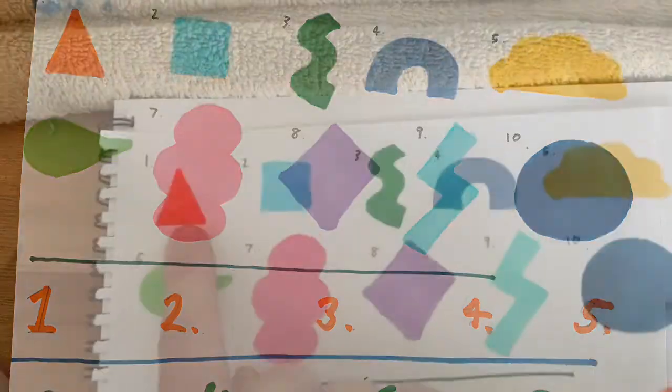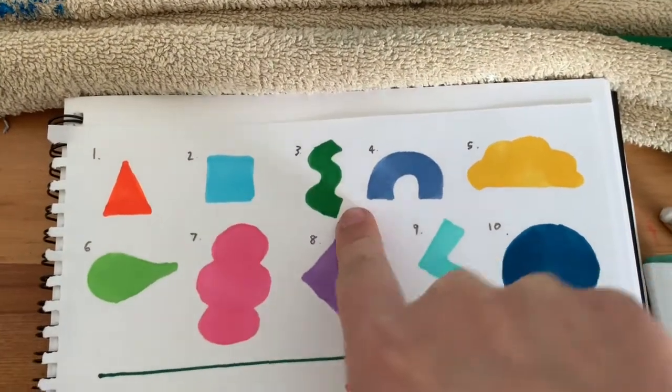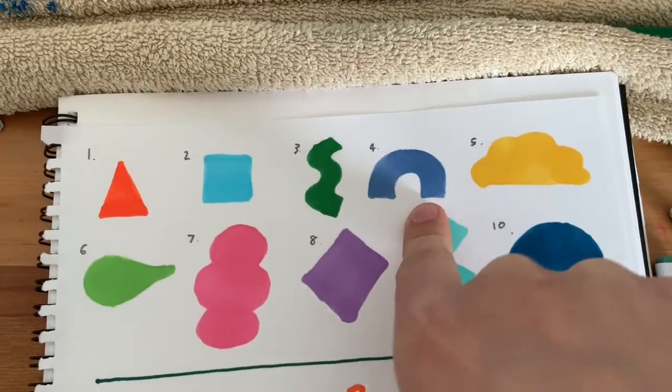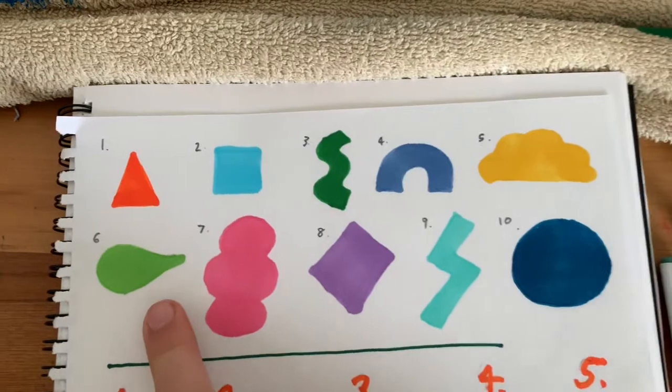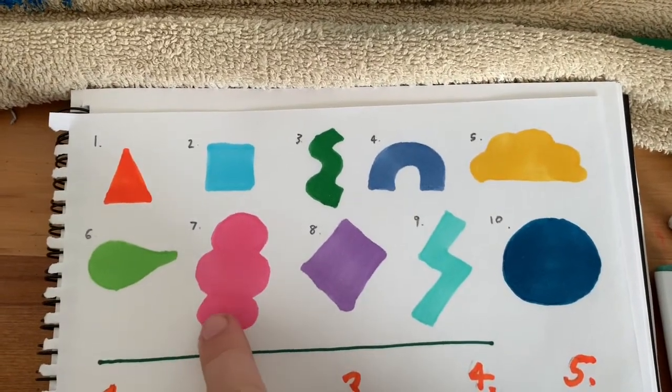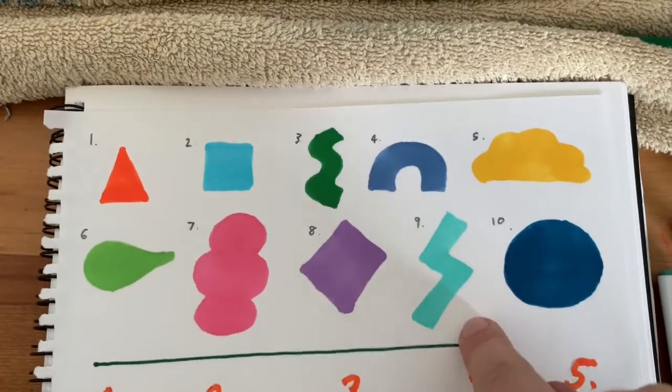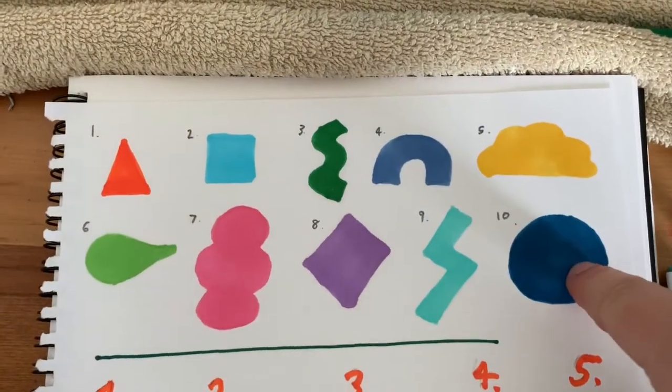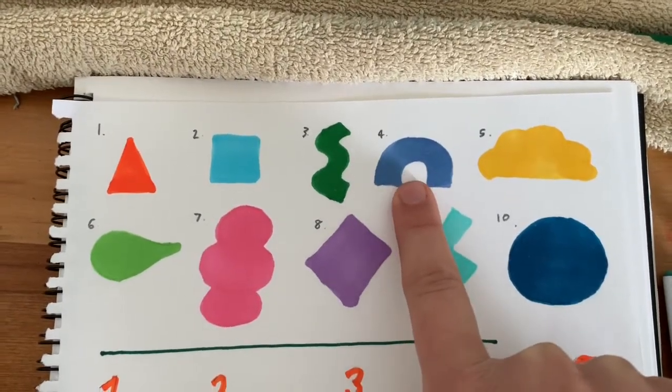If you chose number 1, draw a triangle. Number 2, draw a square. 3, draw a squiggle. 4, draw a rainbow shape. 5, cloud shape. 6, leaf shape. 7, circly shape. 8, diamond shape. 9, lightning shape, and 10, circle shape. My number I chose was number 4, so I'm going to get drawing with that. Make sure you draw it nice and big because this will be the body of our monster.